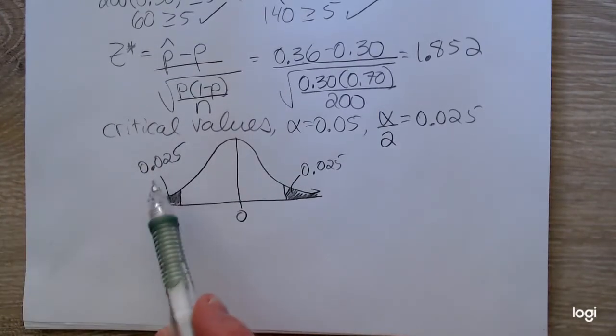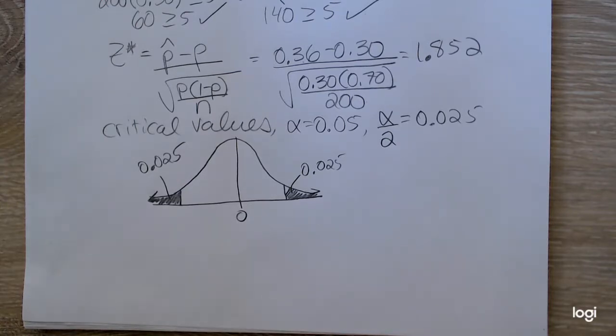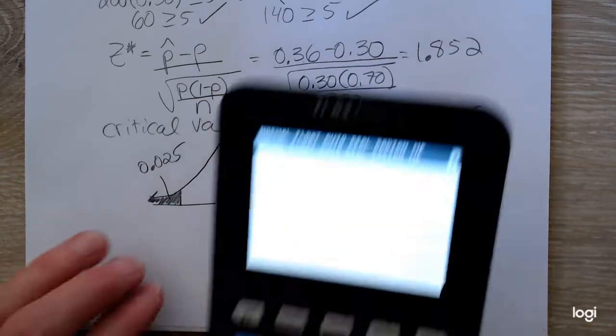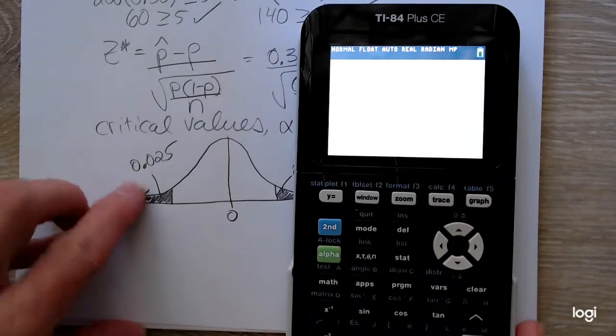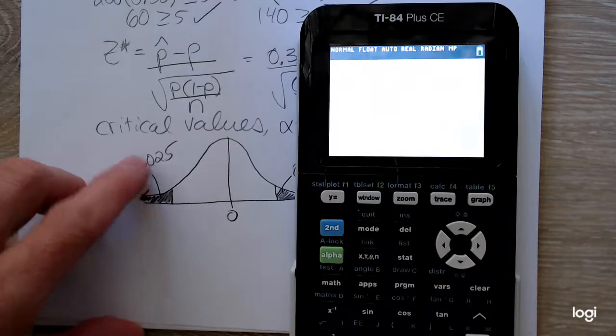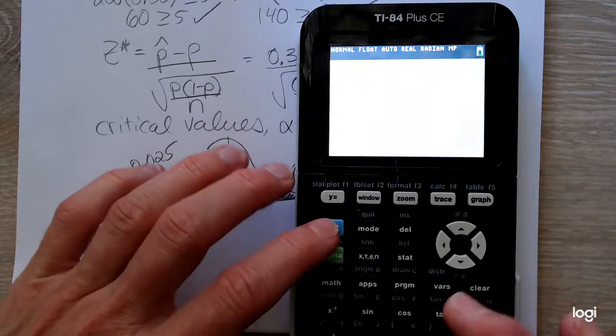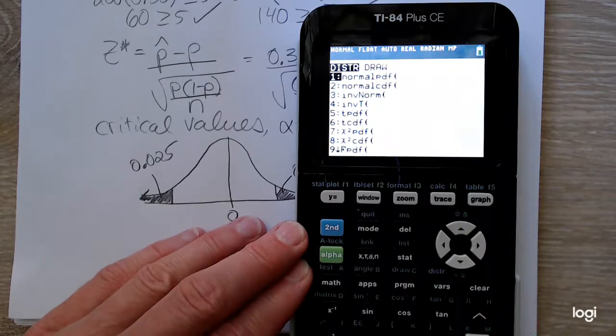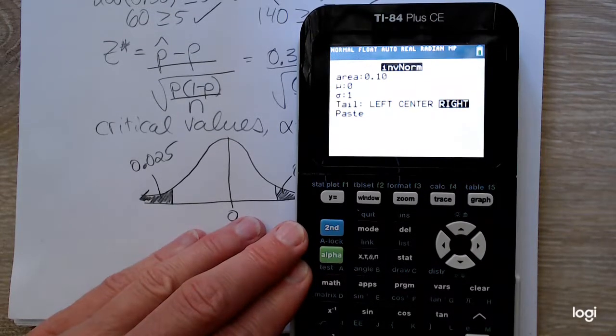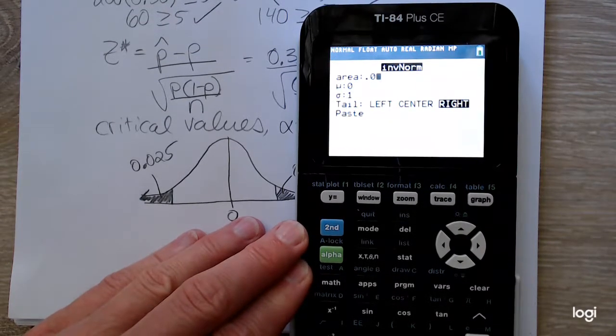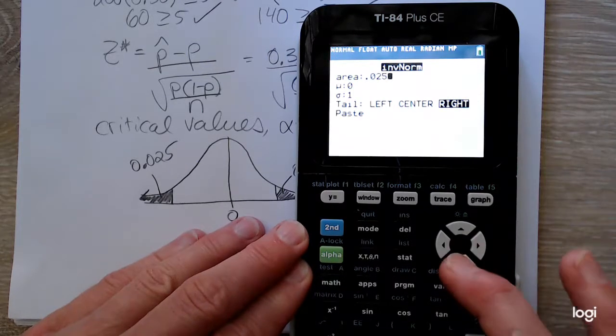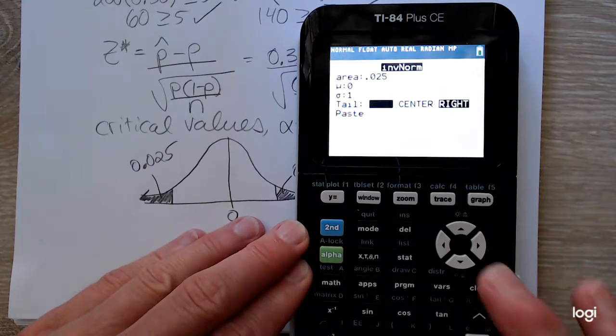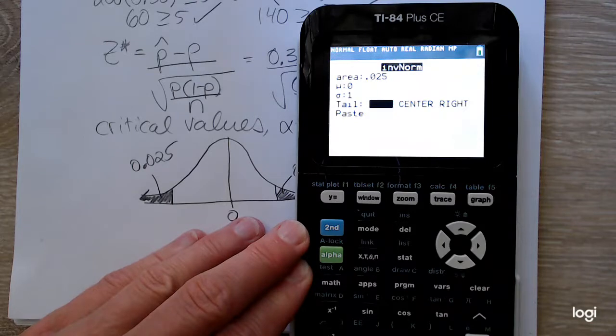So I have 0.025 amount of area in each tail. I could use my standard normal table and find as close as I can inside the body of the table and read outward to find that negative z-score. Or, because I'm using an area first, working backward to find a z-score, I'm going to use my inverse normal distribution.